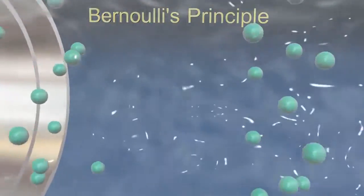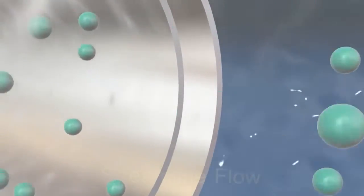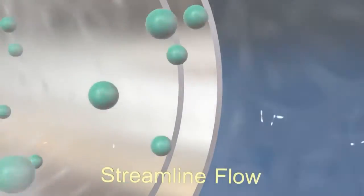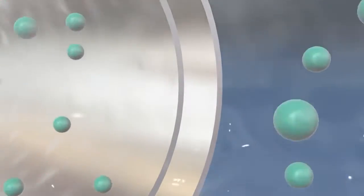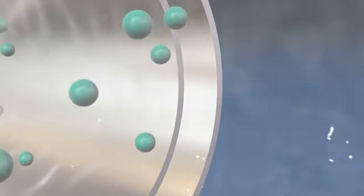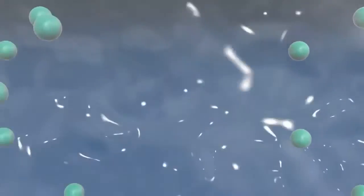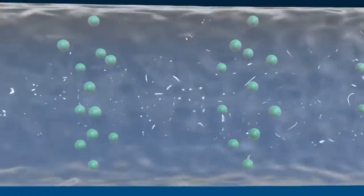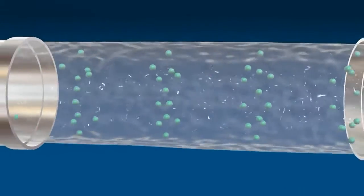Bernoulli's Principle. The flow of a fluid is streamlined if every particle of the fluid flows exactly the path of its preceding particle and has the same velocity as that of its preceding particle.